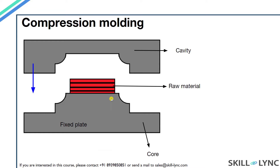In compression molding, the core is fixed and the cavity plate is moving. This is the opposite of injection molding, where the cavity is fixed and the core plate moves. The material to be processed is placed on top of the core, and the moving cavity plate compresses the material to obtain the desired shape. Compression molding is usually used to make rigid and hard-to-break parts like pot handles.